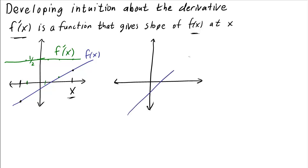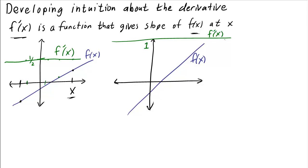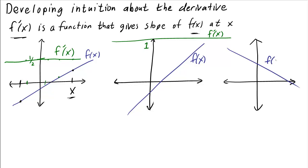If I were to look at the derivative of another linear function, again it would have to be constant. But this time, since this function is steeper, it would be a larger value — let's say one. So f prime of x would just be equal to one. On the other hand, if I had a decreasing function f, then its slope would be negative, so f prime of x would have to be a negative function.